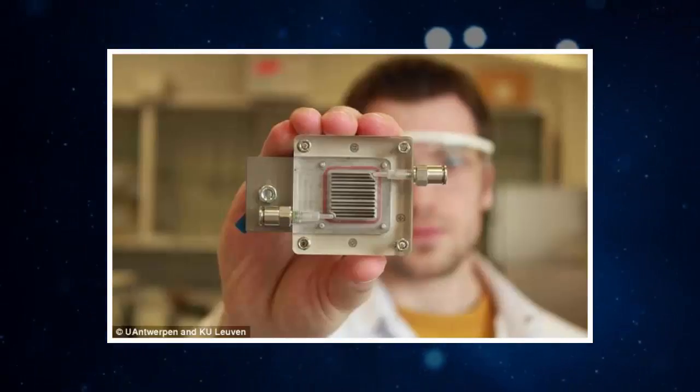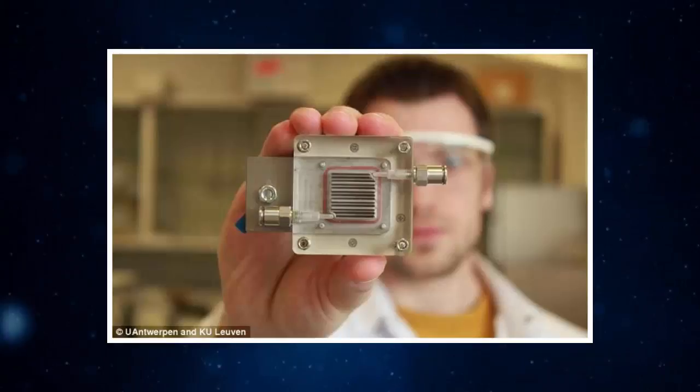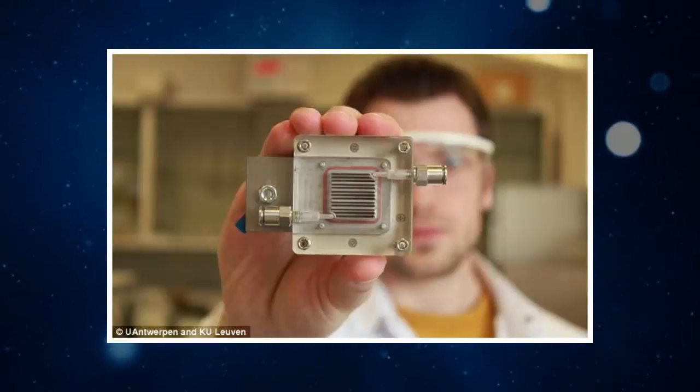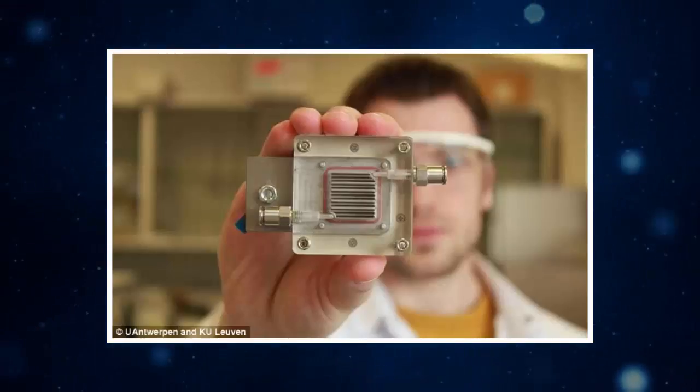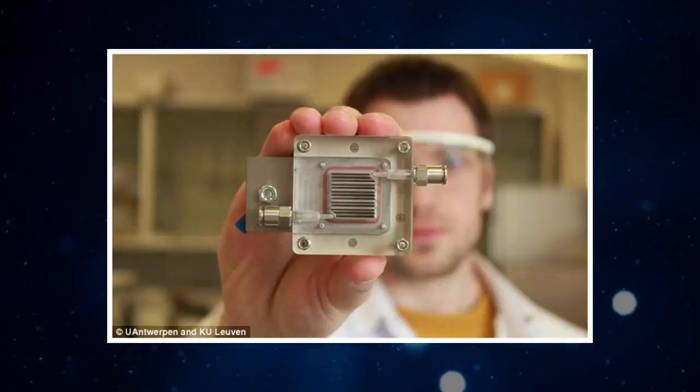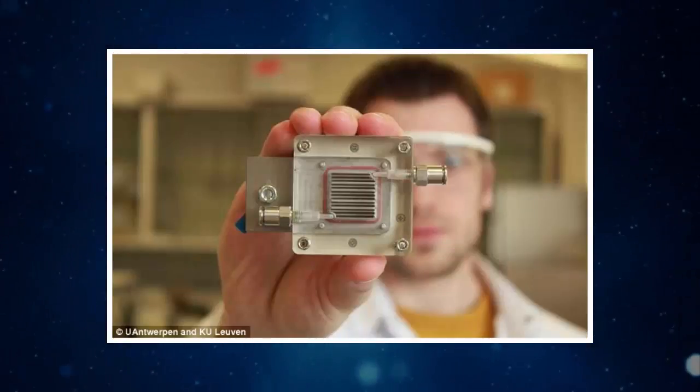Researchers from the University of Antwerp and the University of Leuven in Belgium created the photoelectrochemical cell using catalysts that produce hydrogen gas in the presence of polluted air. Air is purified on one side, while on the other side, hydrogen gas is produced from a part of the degradation products.